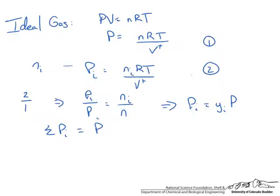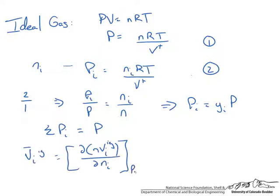To advance we need to discuss partial molar properties such as the partial molar volume of species i. It is defined at constant pressure, temperature, and keeping other species moles constant. This represents the change in molar volume of a species in a mixture due to the addition of that species, keeping everything else constant.